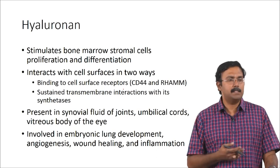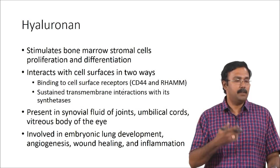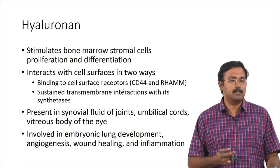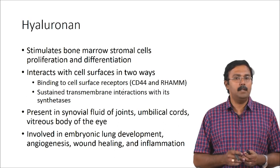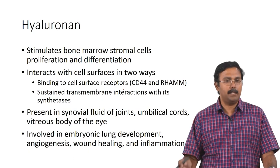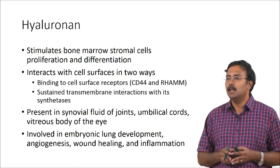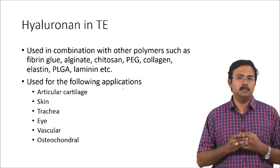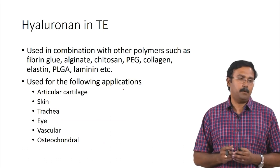Hyaluronic acid is commonly present in your synovial fluid of joints, umbilical cords, and vitreous body of the eye. It has also been proven to be involved in embryonic lung development, angiogenesis, wound healing, and inflammatory processes. Because you have the understanding of where it is used, you try to design tissue engineering applications where you can actually use this. This HA is most commonly used in combination with other polymers — it could be fibrin glue, alginate, chitosan, PEG, collagen, elastin, PLGA, laminin, and many different things.